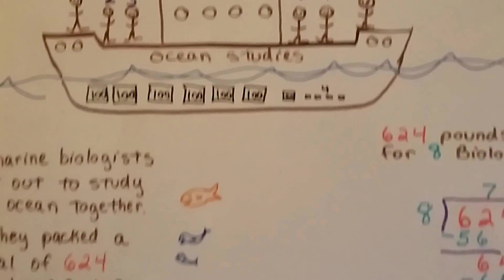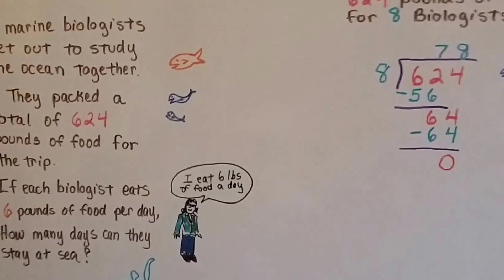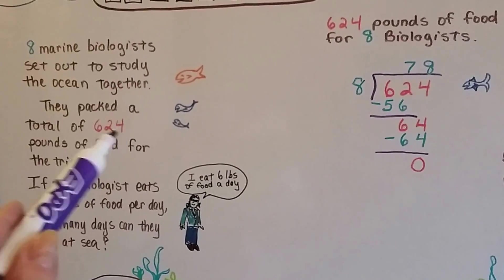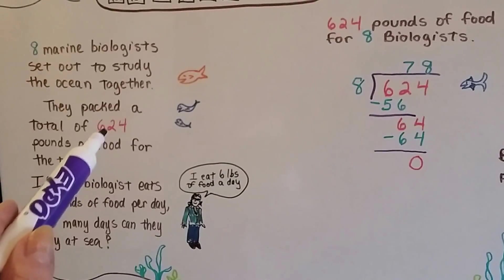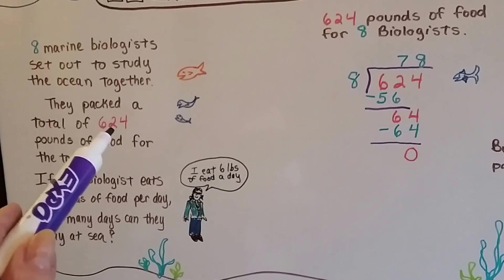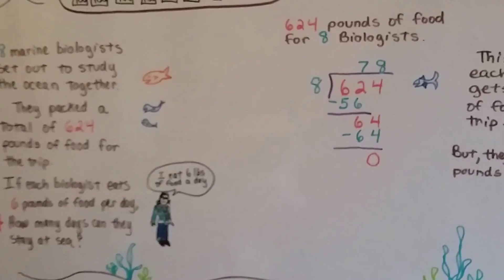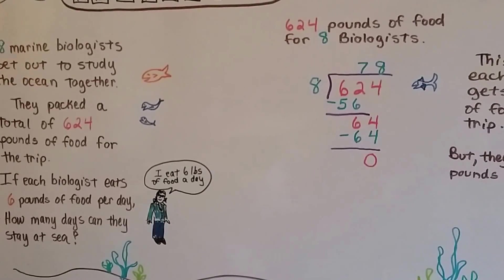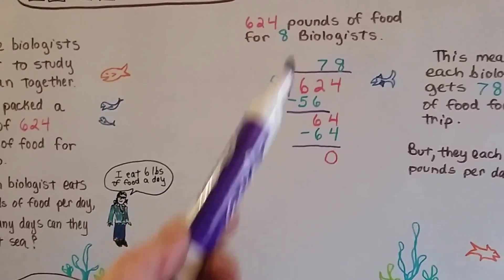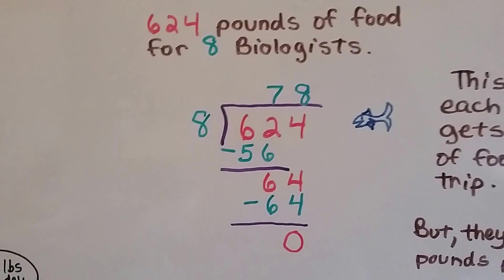So, knowing that they each eat 6 pounds a day, let's figure out how much each of the eight marine biologists can get out of this 624. And when we find out how much of the 624 is theirs, we'll divide that amount by 6 to figure out how many days it'll last. So we have 624 pounds of food and eight biologists. So first let's figure out how much each biologist gets out of this big chunk.